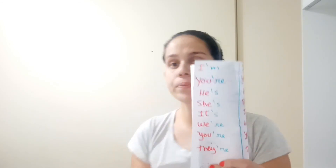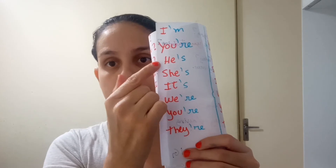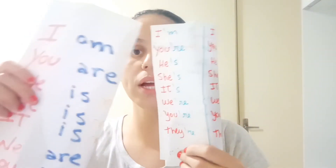But we can make a contraction — we put the words together. So I am becomes I'm, you are becomes you're, he is becomes he's, she is becomes she's, it is becomes it's, we are becomes we're, you are becomes you're, they are becomes they're. We take out the first letter of 'am' and put an apostrophe — this is the apostrophe.